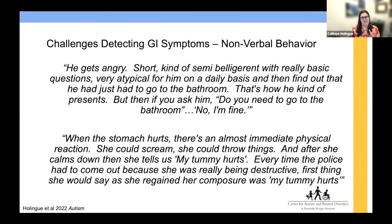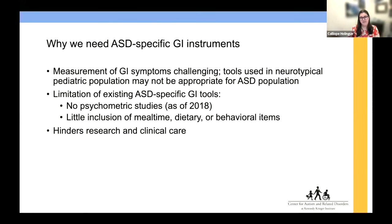One quote is particularly heart wrenching — a parent describing their autistic child's behavior when experiencing GI symptoms: 'When the stomach hurts, there's an almost immediate physical reaction. She could scream, she could throw things. And after she calms down, she then tells us my tummy hurts. Every time the police had to come out because she was being really destructive, first thing she would say as she regained her composure was my tummy hurts.' This speaks to the link between behavior and GI pain, and why sometimes behaviors that are written off as just being part of the autism are in fact reflective of something else — in this case, GI pain. The big takeaway is that we need autism-specific GI instruments, and the lack of them hinders not only research but clinical care.